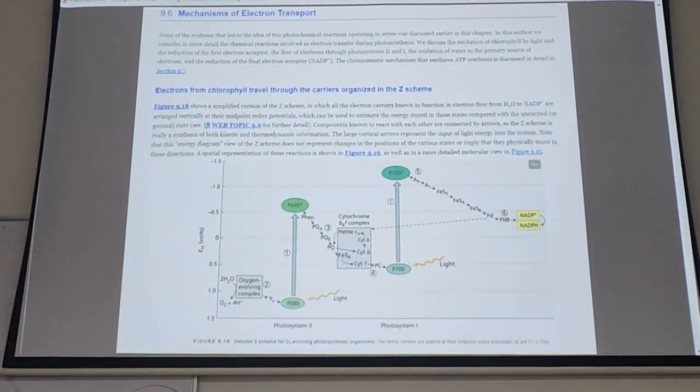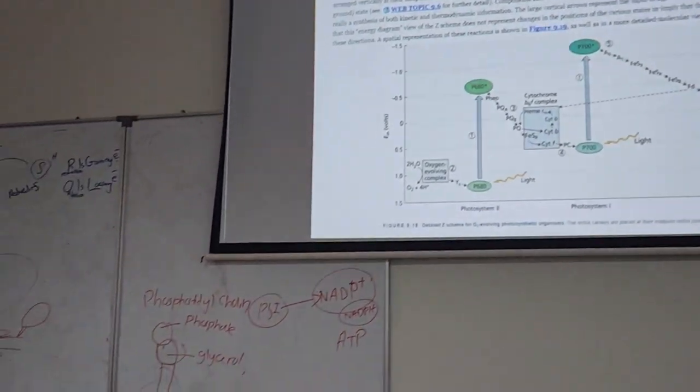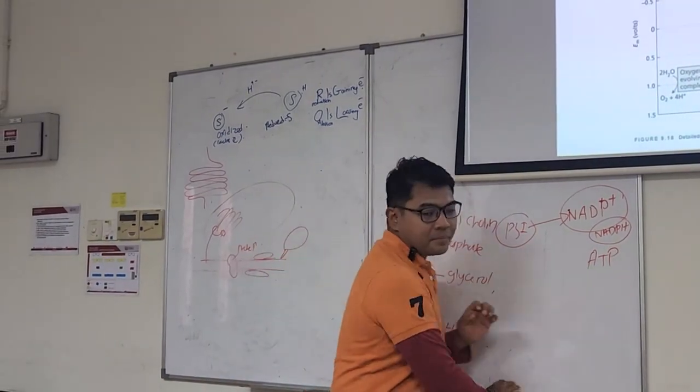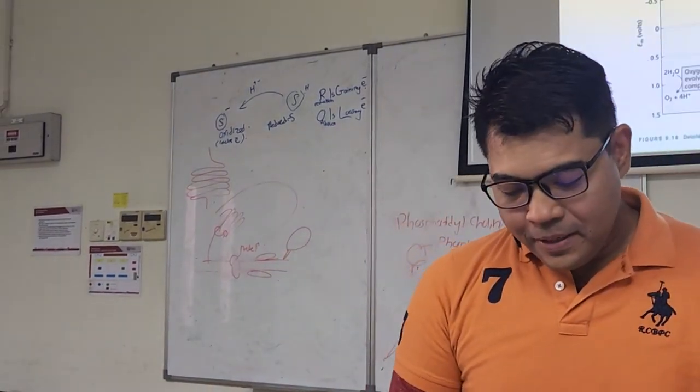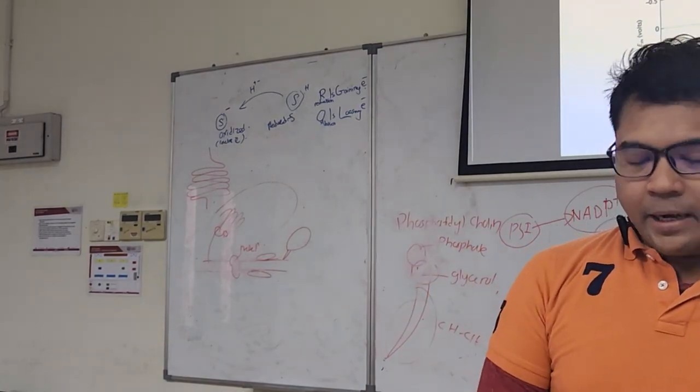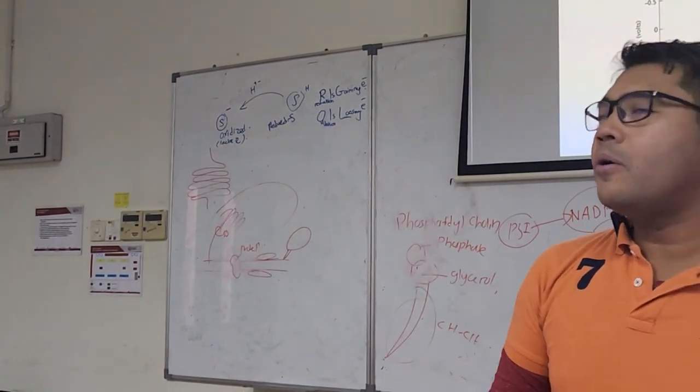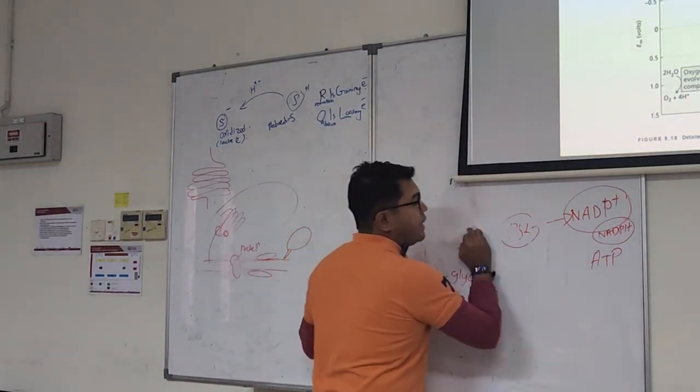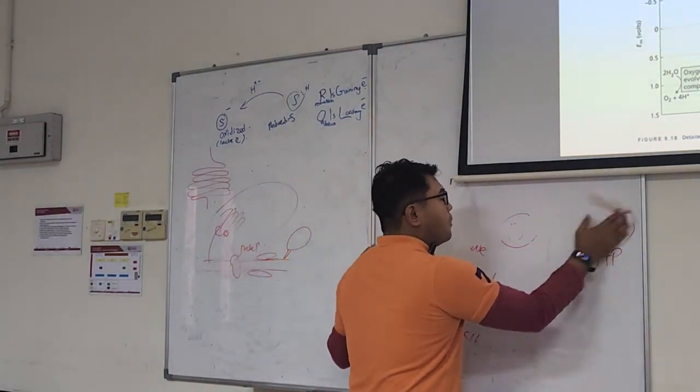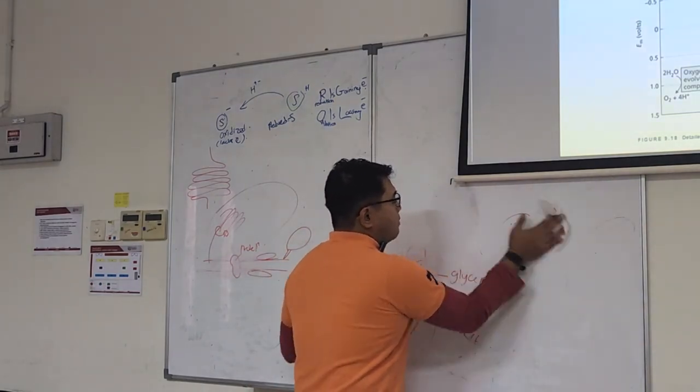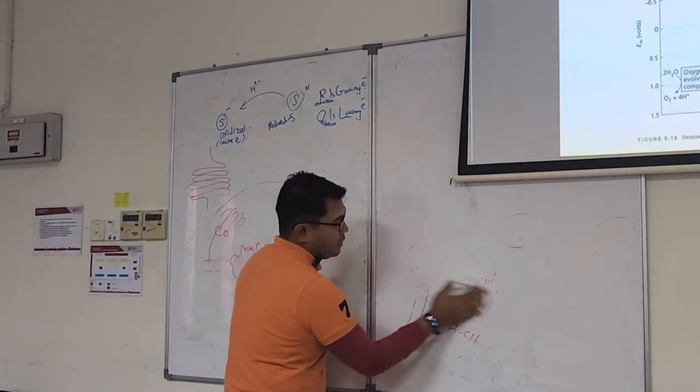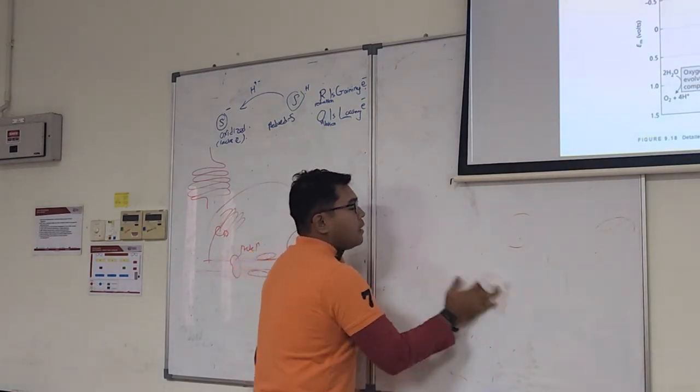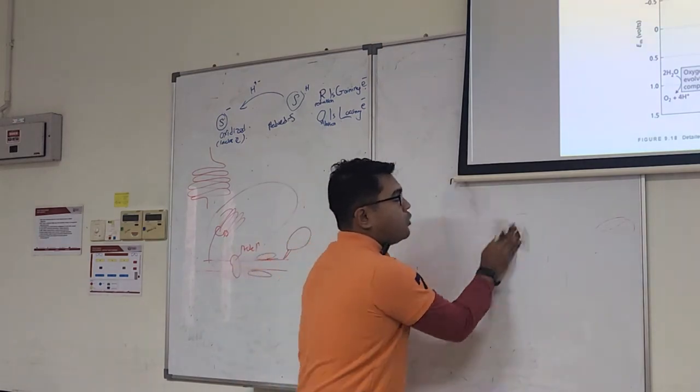Now you know about the antenna pigments, right? So how is the energy transferred? In what manner is the energy or the electron transferred? So that movement of electron, the moment it has activated the reaction center, the P680, it will move in a special manner.